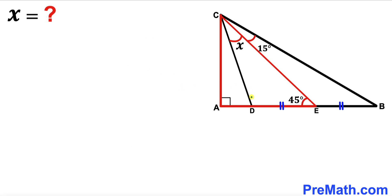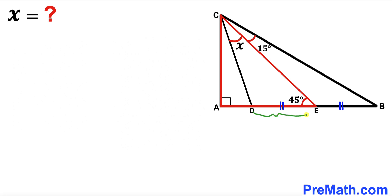Welcome to pre-math. In this video we have got these two triangles: this red triangle EAC and this other triangle BDC, put together as shown in this diagram, such that angle DAC is 90 degrees, angle DEC is 45 degrees, angle ECB is 15 degrees, and this angle ECD is represented by angle X. Furthermore, segment DE equals segment EB.